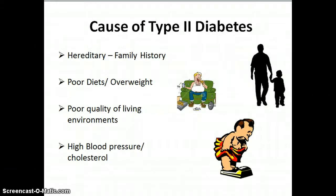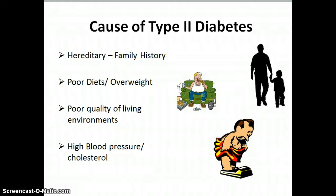So what are the causes of type 2 diabetes? There are many factors, but some of the main ones are hereditary — family history, being passed down from your mother or your father — poor diets, being overweight, not taking care of your body, poor quality of living environments, or high blood pressure and cholesterol.